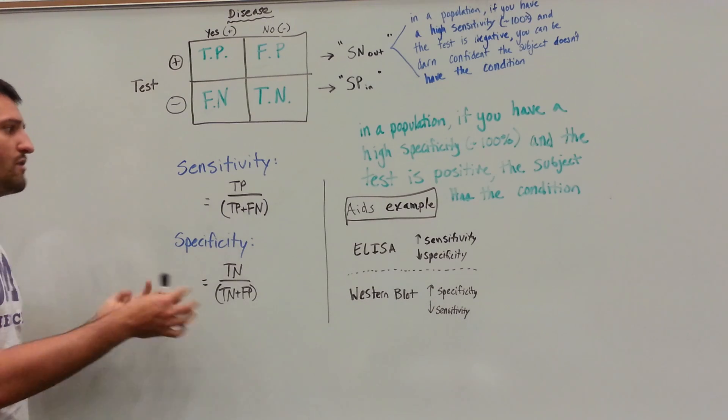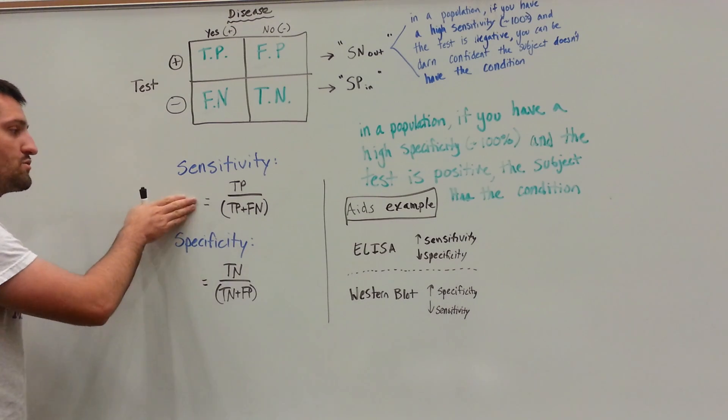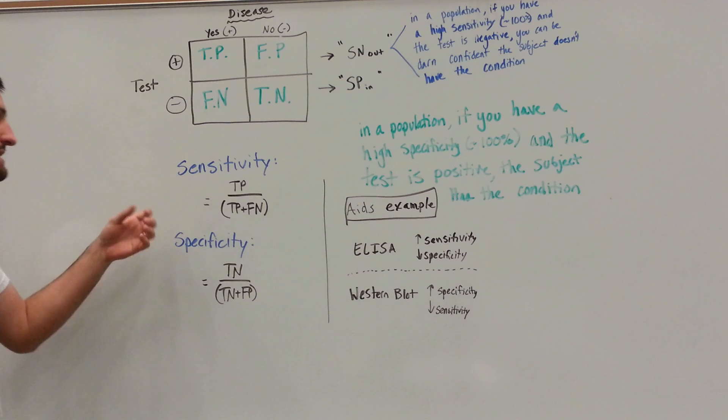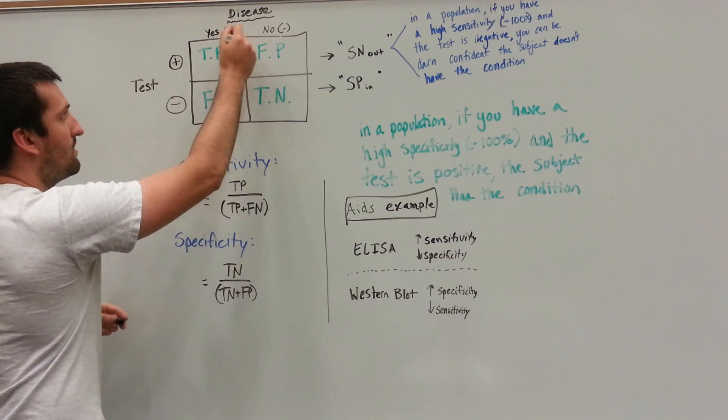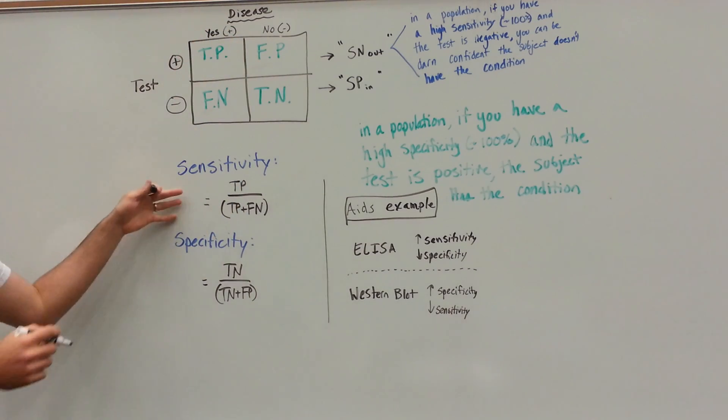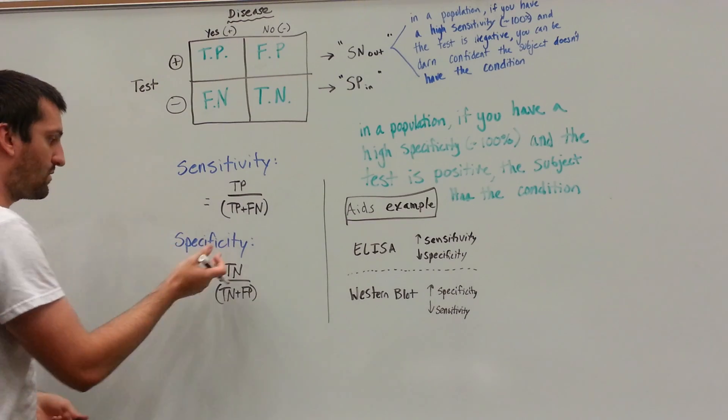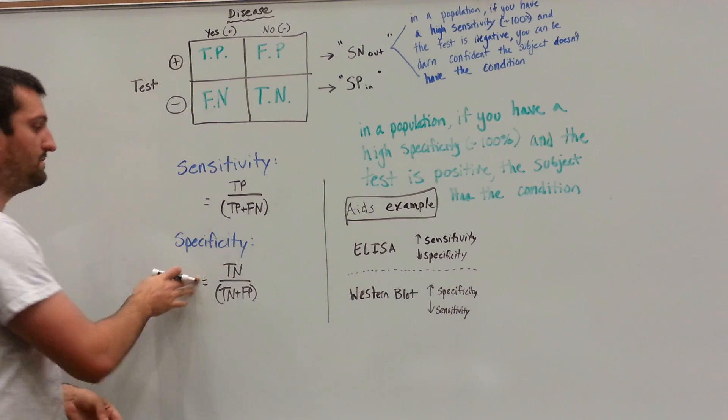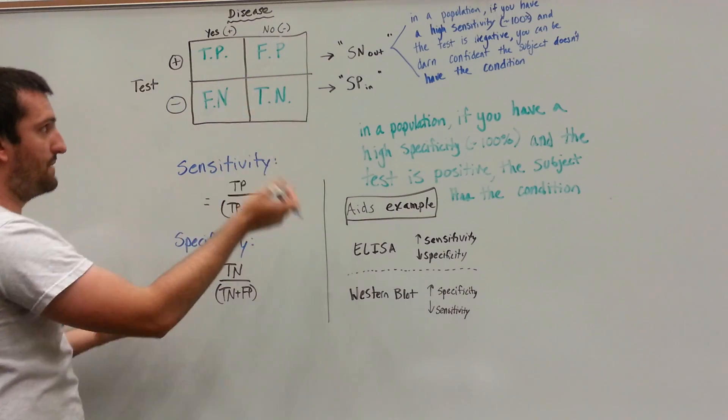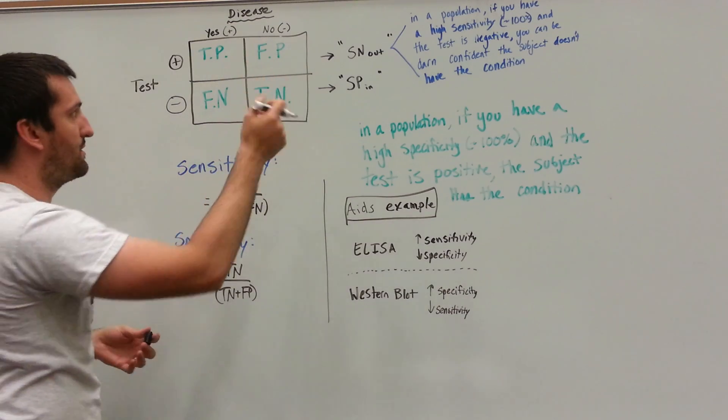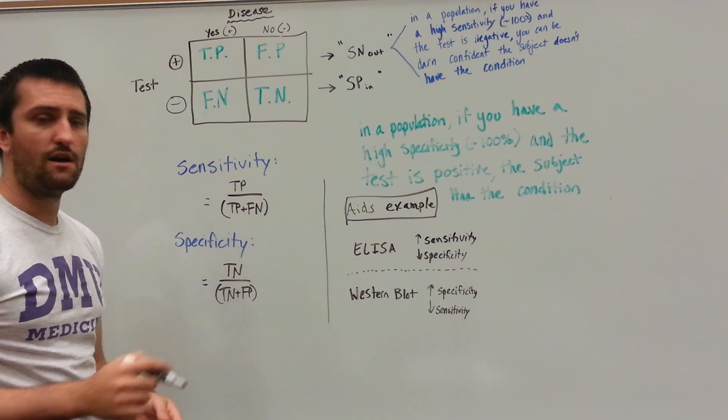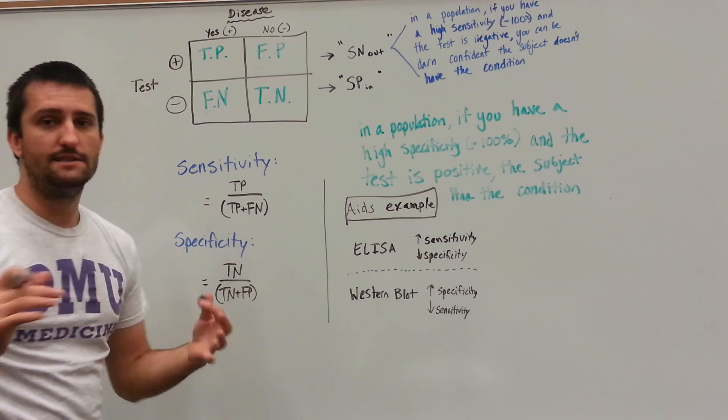Now, without going over any concepts, if you remember these two equations: sensitivity meaning true positives divided by true positives plus false negatives, so we're dealing with the first column, then that will get you most likely a point on the board. And likewise, for specificity, true negatives divided by true negatives plus false positives, so we're dealing with the second column, always have the true on top.